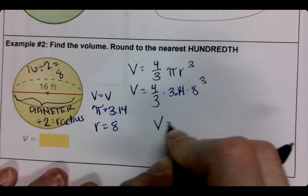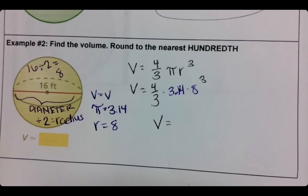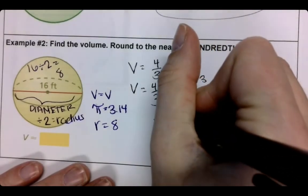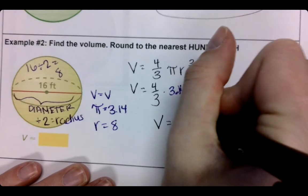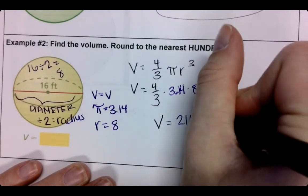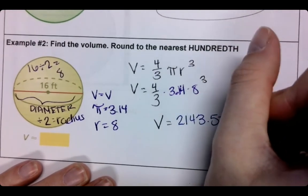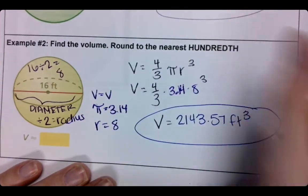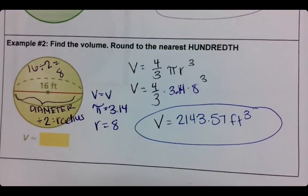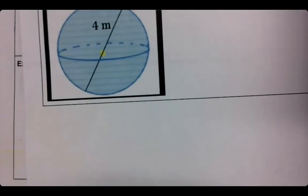Remember, we are rounding to the nearest hundredth. So that's two numbers after the decimal. I got 2143.57, and this would be feet cubed. Hopefully that is what you got as well. And you're starting to feel pretty good about this.